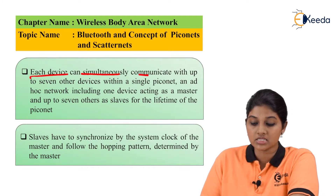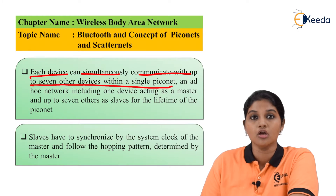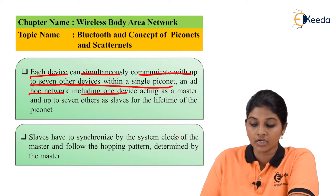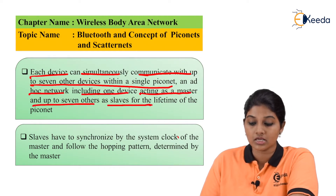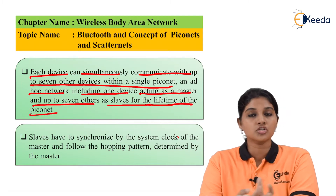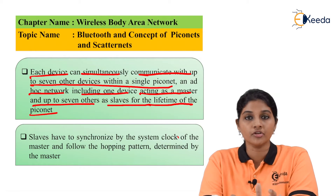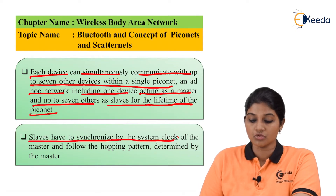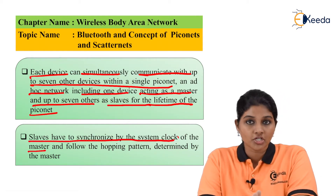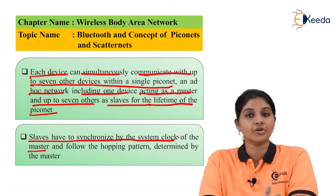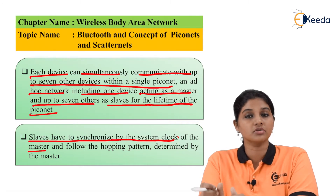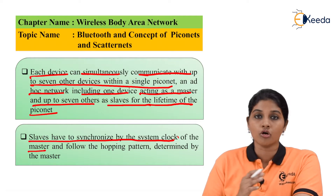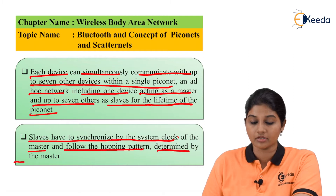Each device can simultaneously communicate with up to seven devices within a single Piconet. So we can connect seven devices using Bluetooth technology, with one device acting as a master and the other seven acting as slaves for the lifetime of the Piconet. Slaves must be synchronized with the system clock of the master so that proper communication takes place — data transmitted by the master is received by slaves at the same speed, following the frequency hopping pattern determined by the master.